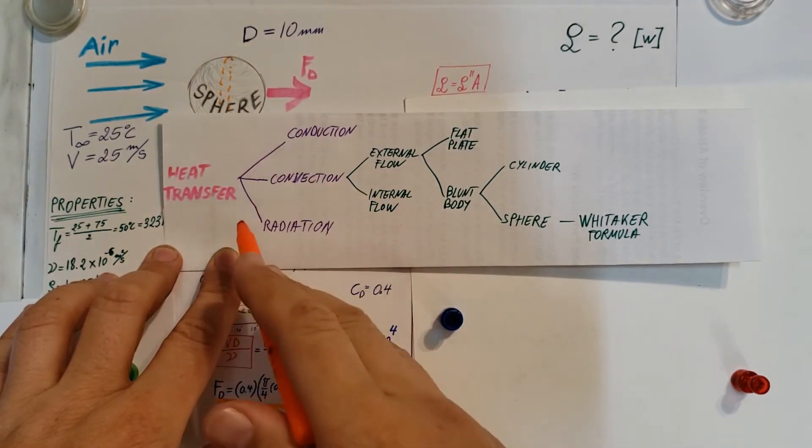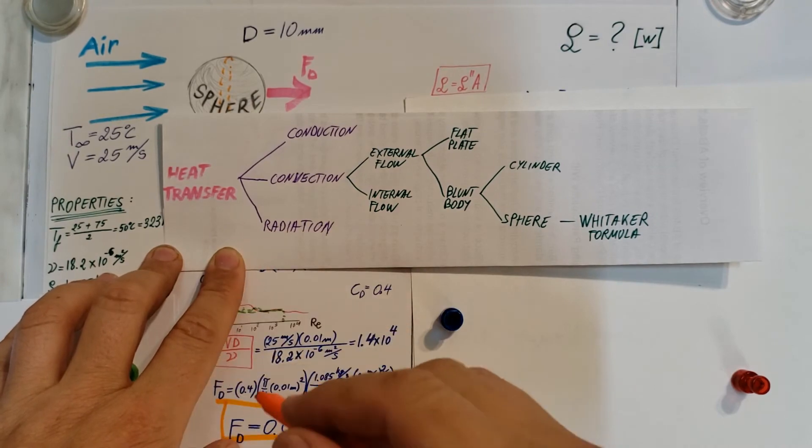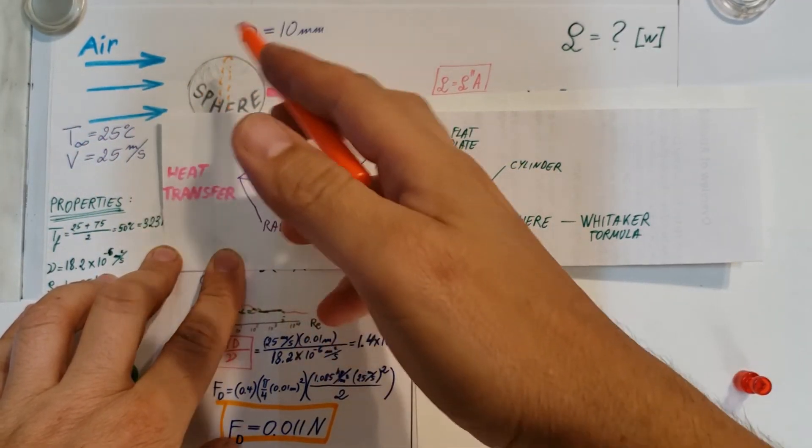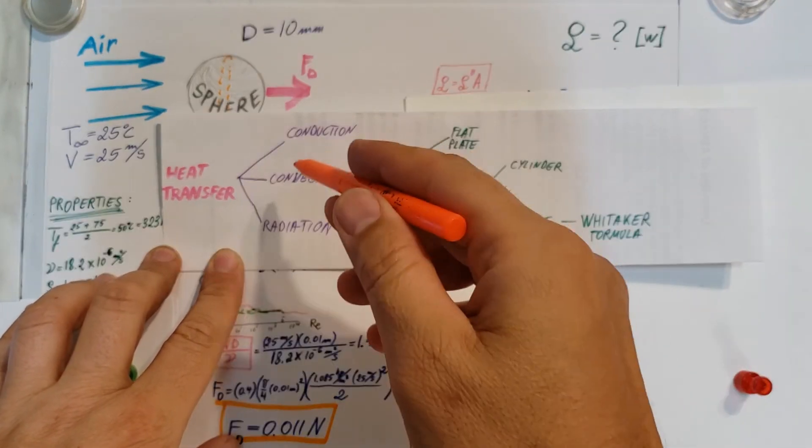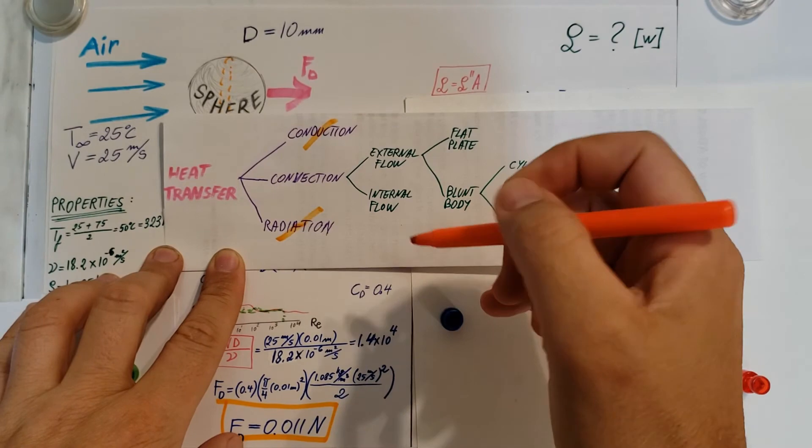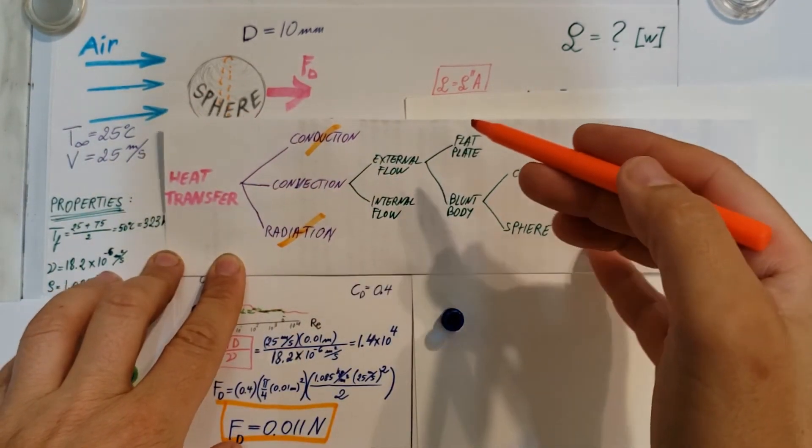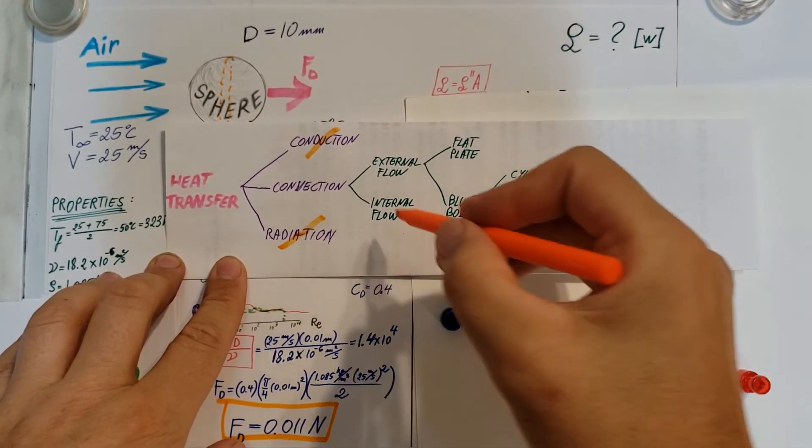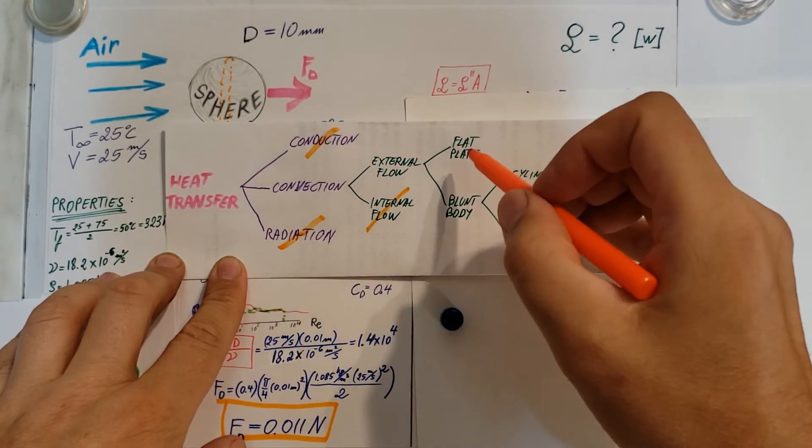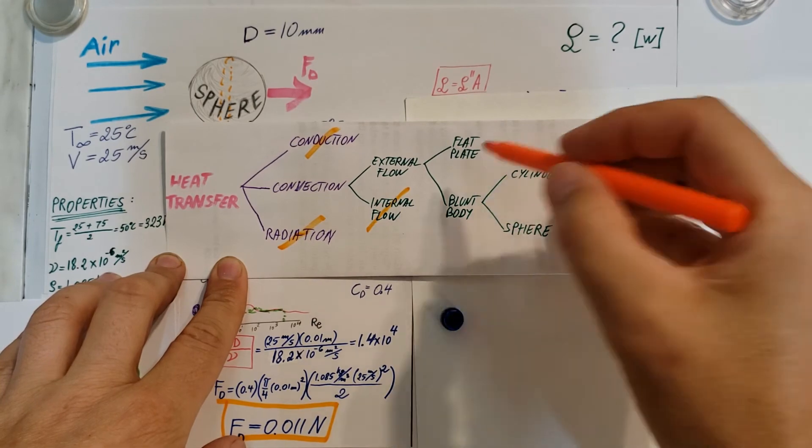We have a heat transfer and in heat transfer we have conduction, convection, radiation. We have air blowing over a surface, some kind of geometry, right? So that is convection. So not radiation, not conduction. We are not in a duct, we are not in anything like that, so not internal flow, it's external flow.